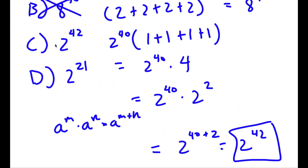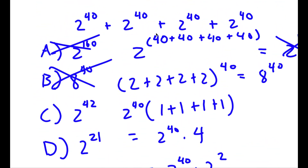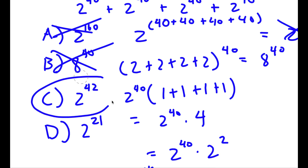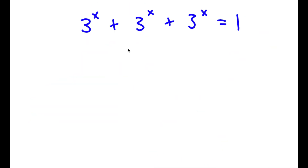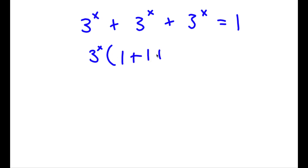This is actually the right way of adding these four terms, so C is my answer. Alright, now for the bonus problem: 3 to the power of x plus 3 to the power of x plus 3 to the power of x is equal to 1. The first thing I'm going to do is factor out 3 to the power of x from the left-hand side. So now I have 3^x times (1 plus 1 plus 1), and 1 plus 1 plus 1 is 3. So now I have 3^x times 3 is equal to 1.